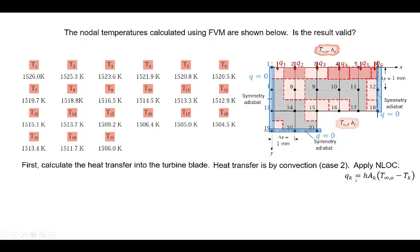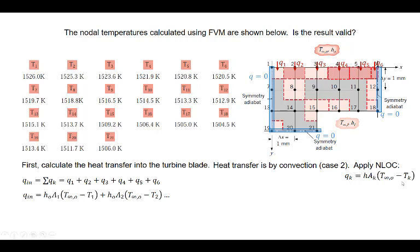The following condition applies to each node: the convection heat transfer coefficient associated with the combustion gases, times the area over which heat transfers into that volume, times the appropriate temperature difference. Newton's law of cooling is applied to the first and second volumes, with similar equations for the third, fourth, fifth, and sixth. For each volume, we use the heat transfer coefficient times the face area times the temperature difference between the fluid temperature and the nodal temperature, assuming the nodal temperature exists across the entire top face.